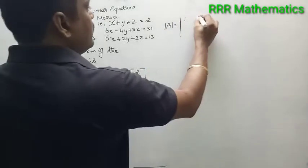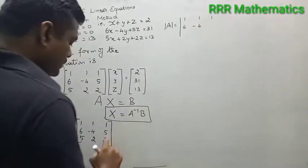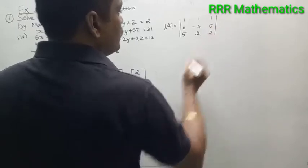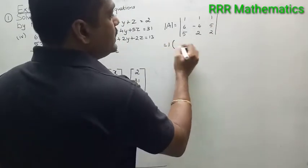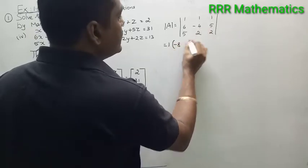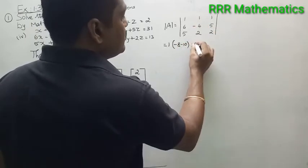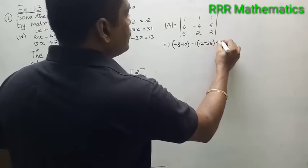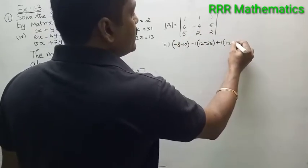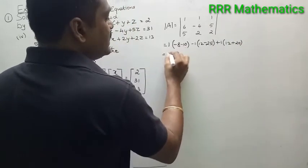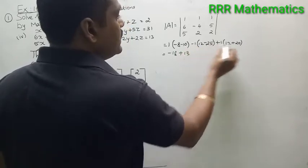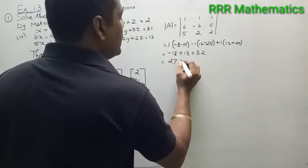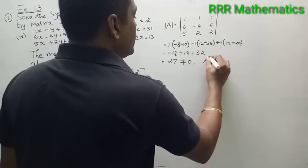The determinant of A is expanded from the matrix 1, 1, 1 / 6, minus 4, 5 / 5, 2, 2. Expanding: 1 into (minus 8 plus 10), minus 1 into (12 minus 25), plus 1 into (12 plus 20). That gives 1 times 2, minus 1 times minus 13, plus 1 times 32. This simplifies to 2 plus 13 plus 32, giving 27, which is not equal to 0. Therefore A inverse exists.